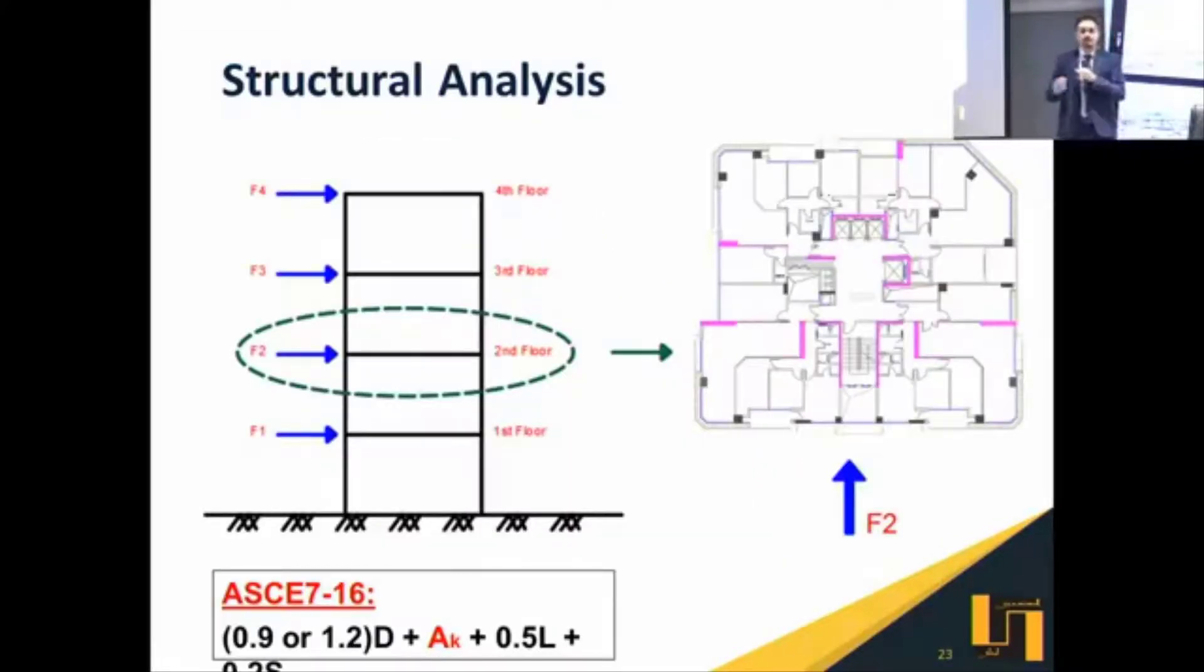Now what's next? Starting from this point, we can deal with this blast pressure as if it is a wind pressure. We transform this pressure into story shears, and then, for example, in the second floor, this force F2 will be distributed by the diaphragm behavior of the slab among the structural system elements, whatever the resisting system is: shear walls, framing system, etc.